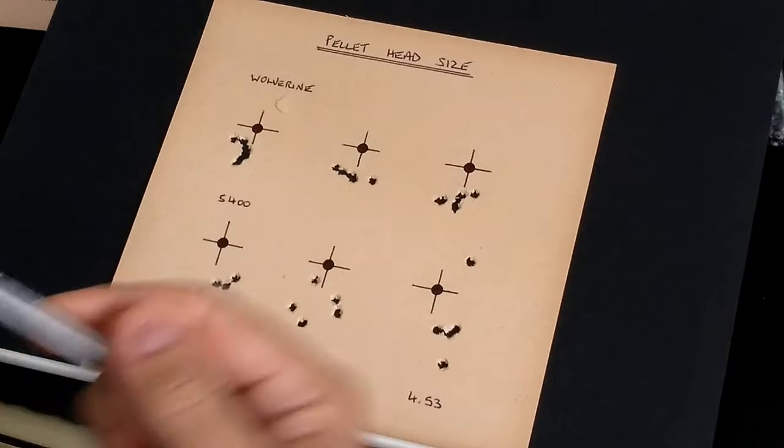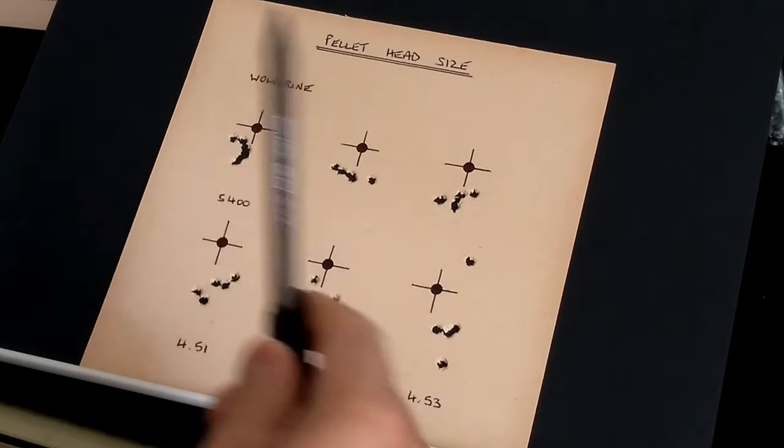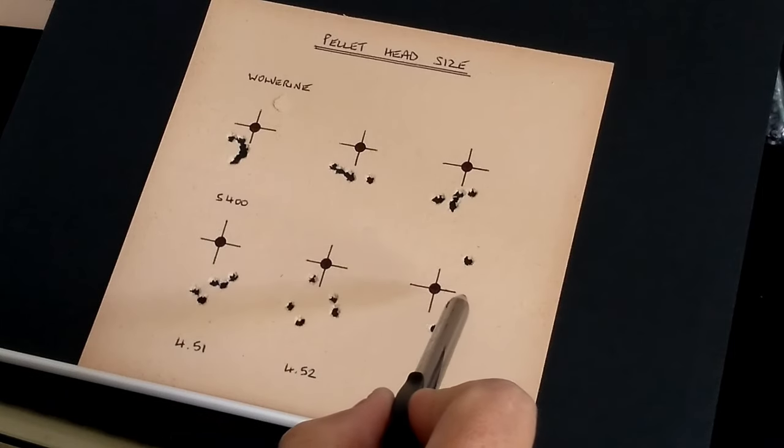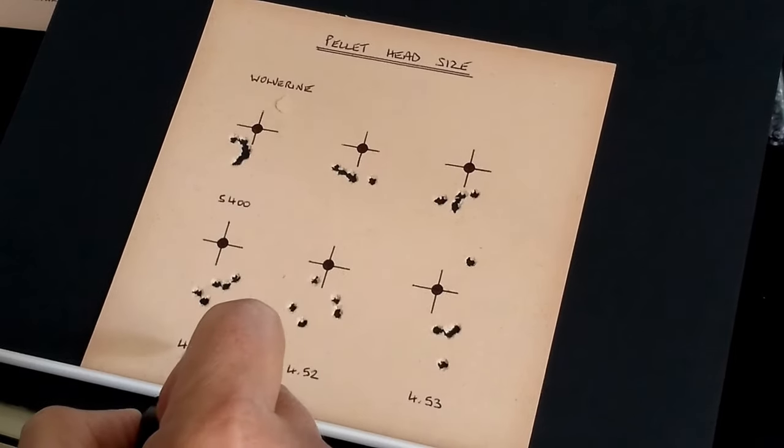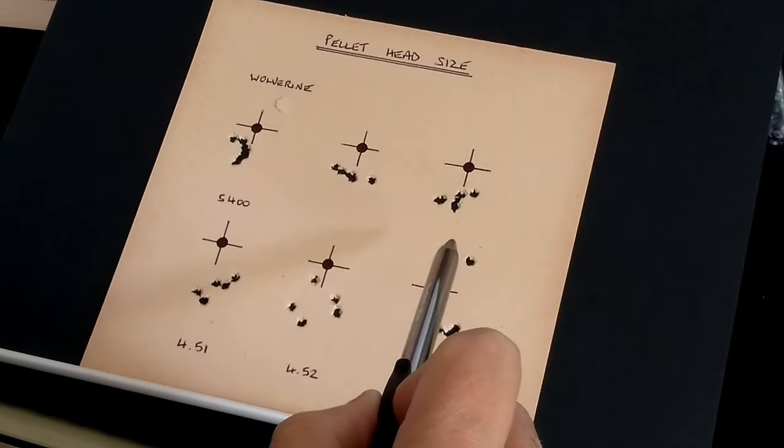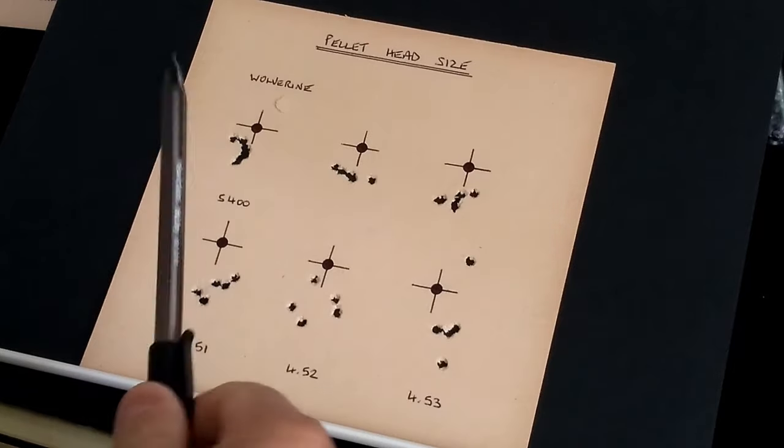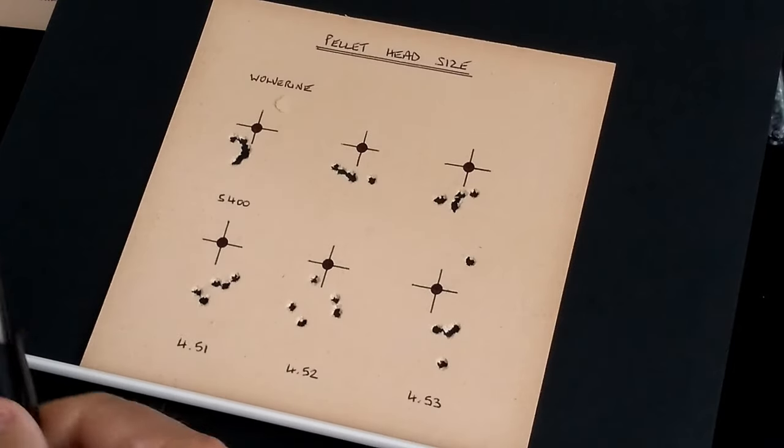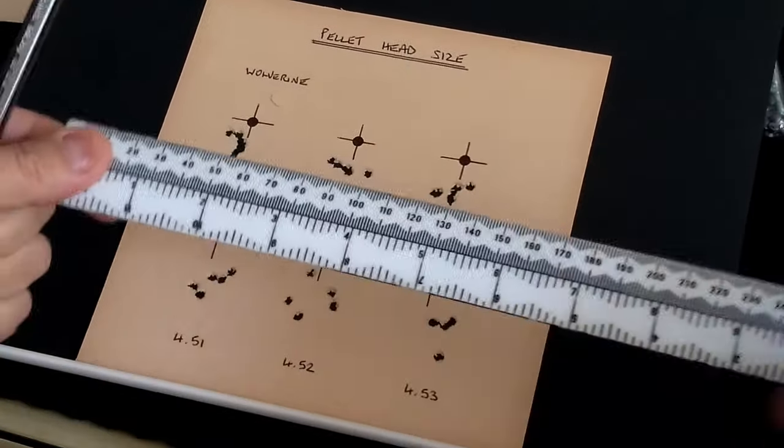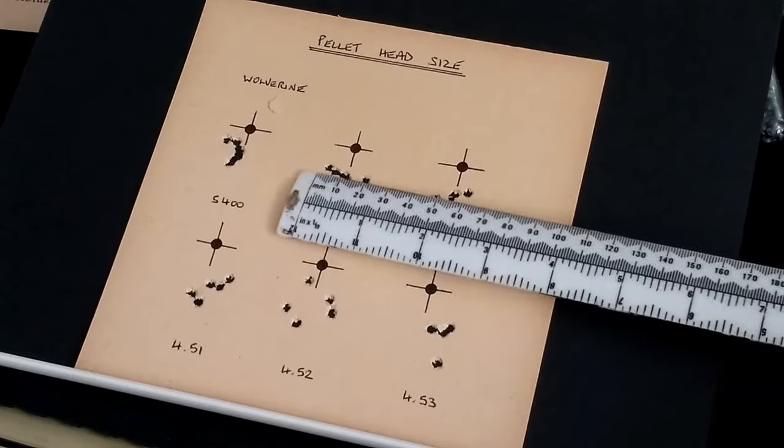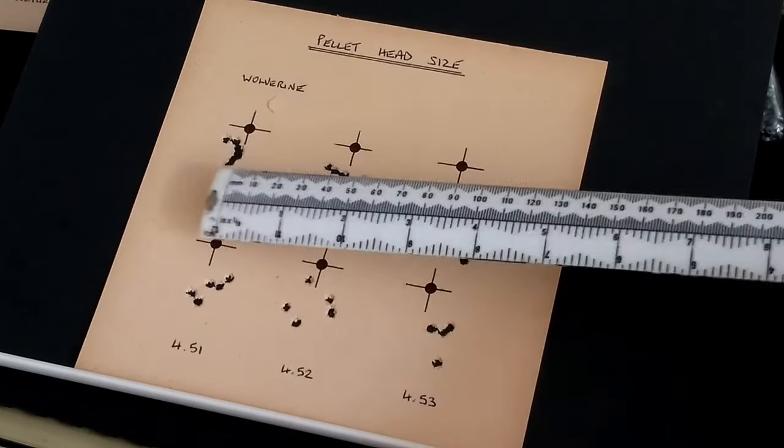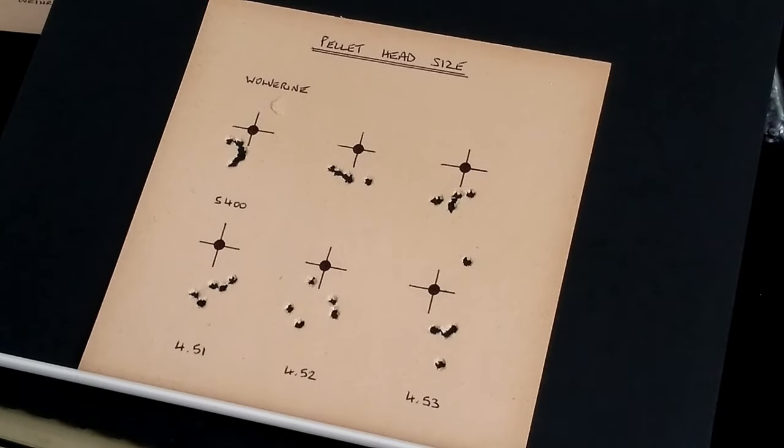Let's take a look at the head size target then. Again we've got the Wolverine shots at the top and the S-400 at the bottom. Starting up with the 4.51s in the left column, 4.52s in the middle, 4.53s in the right. Looking at the Wolverine let's get the ruler out again on this. You can see they're all pretty similar. Nothing really to choose from those from the Wolverine.